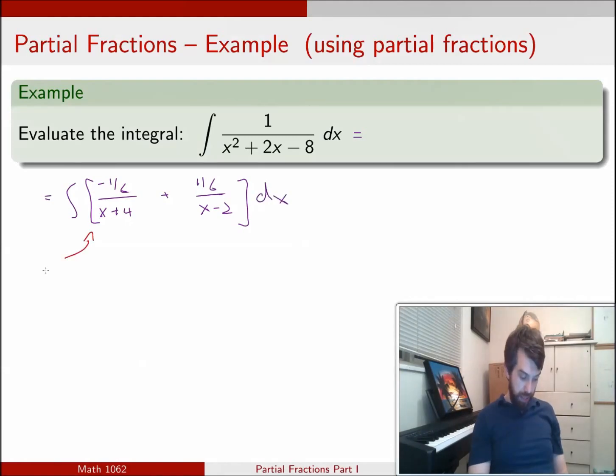For the left expression, I'm going to set my u is equal to x plus 4, my du is therefore just equal to dx. For the right expression, I've used another variable, how about v, I'll call it x minus 2, and then dv is going to be equal to just dx.